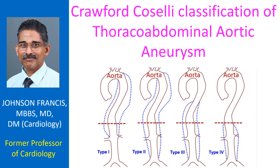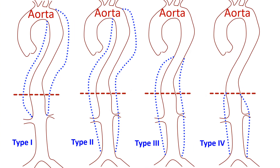Crawford Causley classification of thoraco-abdominal aortic aneurysm. Type 1: only the suprarenal portion of the aorta is involved. Type 2: the entire thoraco-abdominal descending aorta is involved up to the bifurcation.